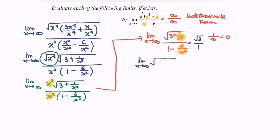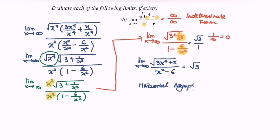So as a conclusion, the limit as x approaches positive infinity for the function square root of (3x to the power 4 plus x) over (x squared minus 6) equals square root of 3. For your information, we can also say that the horizontal asymptote is y equals square root of 3. Thanks for watching!